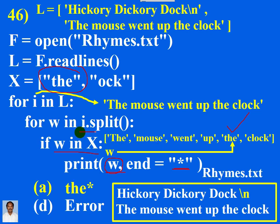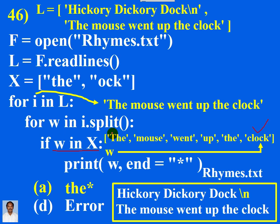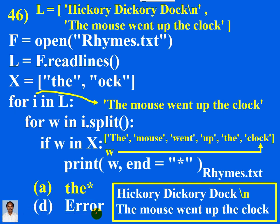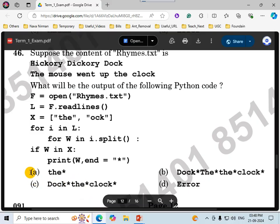Don't stop — continue. The last element of i.split appears in variable w: 'clock'. Clock in x — wrong, no element by the name clock, not executed. No more elements, so we exit the inner for loop. The control comes to the outer for loop — no more lines in l, so we exit the outer for loop also. The final answer is option A: the*. If the indentation was taken as wrong, the answer would be D, error. So correcting the indentation gives option A; otherwise, option D error.